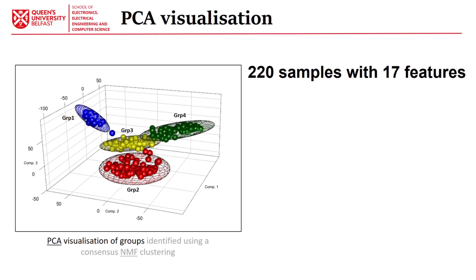One of the best visualizations I have is of four subgroups obtained using consensus NMF clustering, colored by clustering result and visualized using three principal components. This is from medulloblastoma, a childhood brain tumor. It clearly shows group one — a benign brain tumor group — at distance from groups two, three, and four. Interestingly, groups three and four have rather similar characteristics, which is why their samples cluster near each other after reliable consistent clustering.